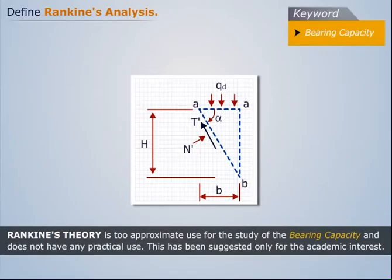Wedge 1 is a Rankine's active wedge forced downwards by the load QD acting on the base A-A' of the footing, so the vertical face of the wedge is forced outwards.